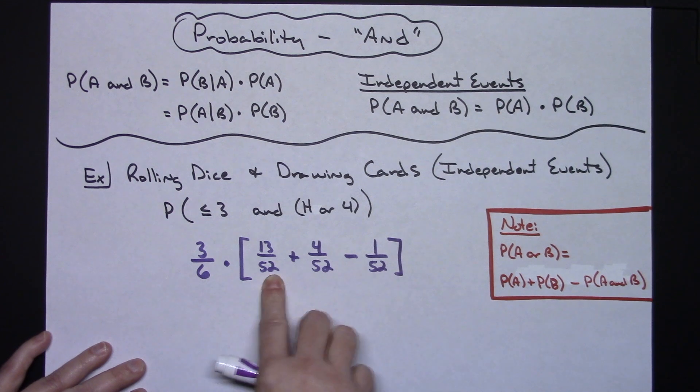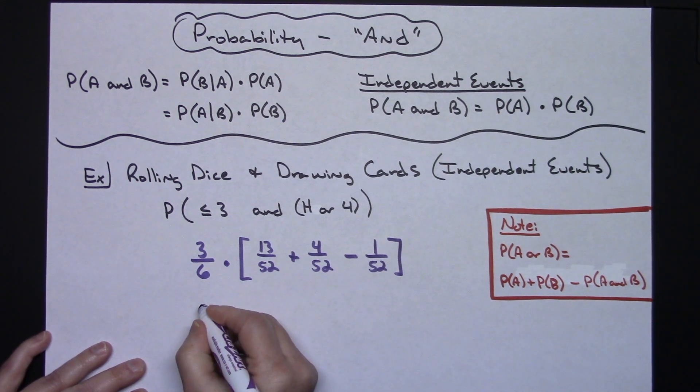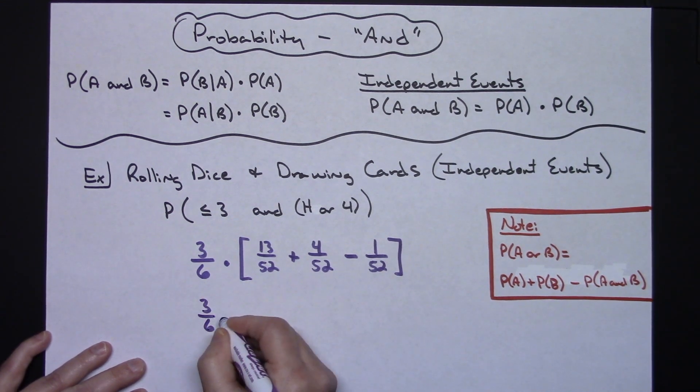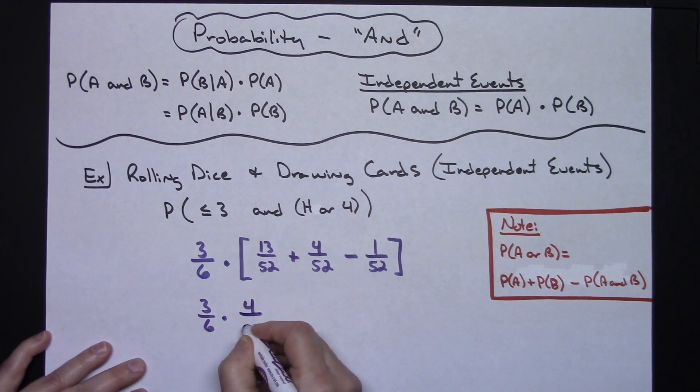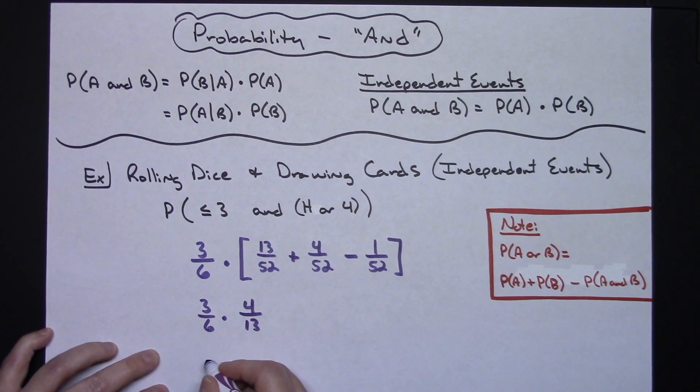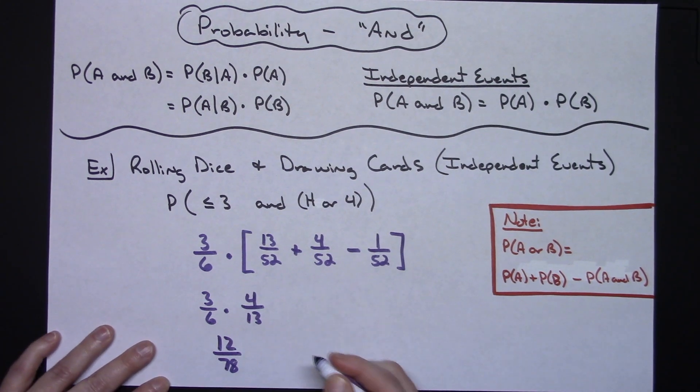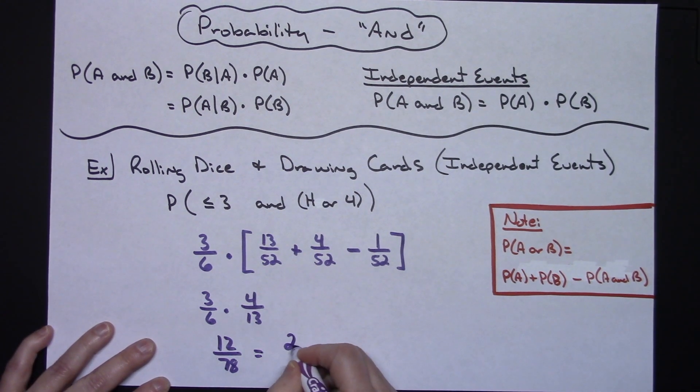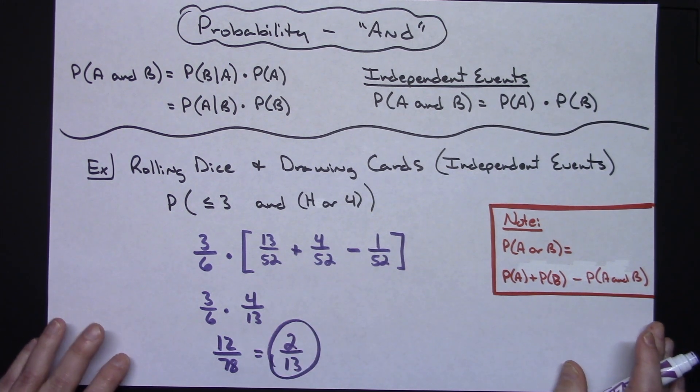At this point, putting this all together and reducing to lowest terms, you're going to get four thirteenths. So I'm going to have three sixths times four thirteenths, and that turns out to be 12 over 78, and if you reduce that to lowest terms you're going to get two thirteenths.